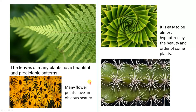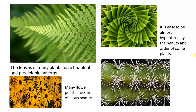Many flowers and flower petals have an obvious beauty — absolutely wonderful. It is easy to be almost hypnotised by the beauty and order of some plants. This is almost in the shape of a spiral — look how you go around for each one. Look at this beautiful cactus here. Absolutely incredible how plants can do that.